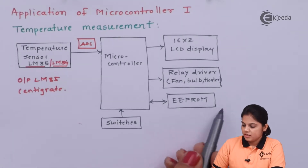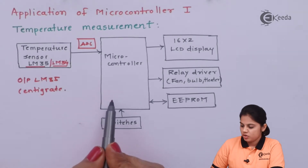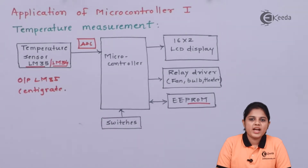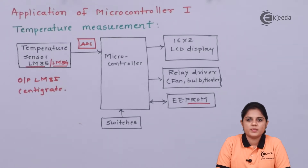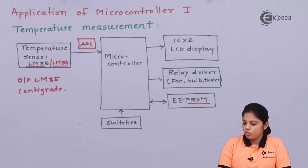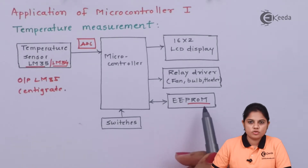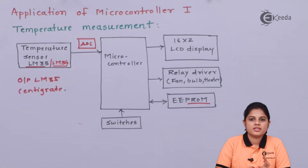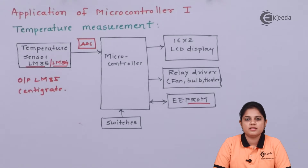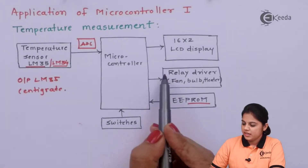ROM is used as program memory. We have to write a program to instruct the microcontroller to perform a specific task, and this program may change later according to the change in the application. EEPROM is used so that this program memory is erasable — you can erase the program and change it according to the application.